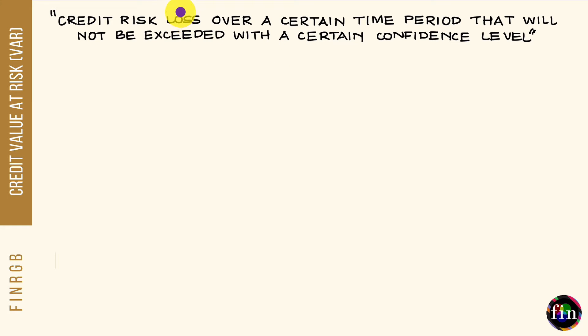The first aspect is that my credit VAR is essentially a loss number. Secondly, it's a loss which arises because of or stems from credit risk related events. Number three, it's a loss which is realized over a certain chosen time period, which is our horizon. And number four, it's a threshold loss number whose probability of not being exceeded is equal to our chosen level of confidence.